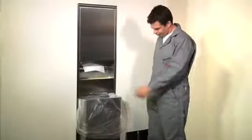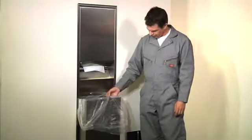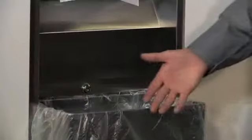When custodians are in a hurry, it's faster to drape the liner over the top edges of the receptacle, rather than install a liner on the receptacle's internal hooks.